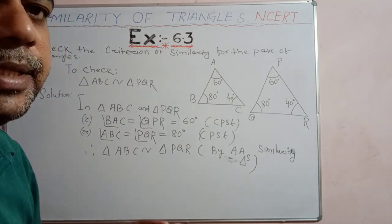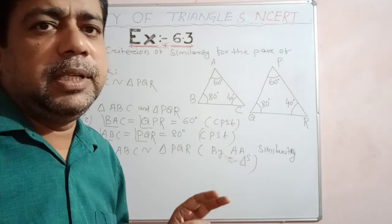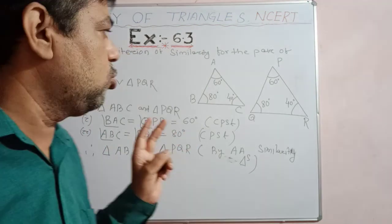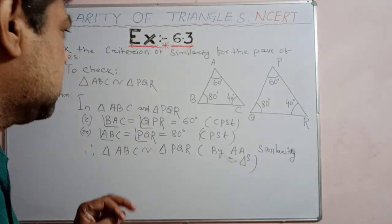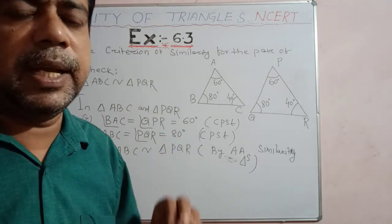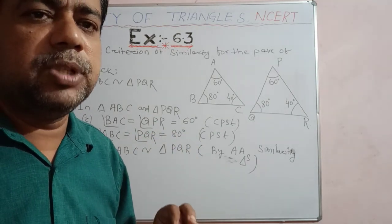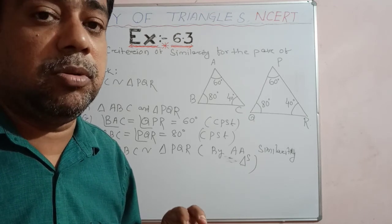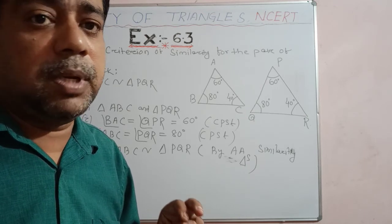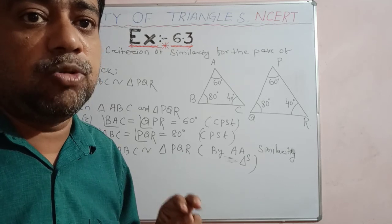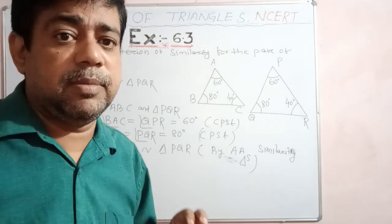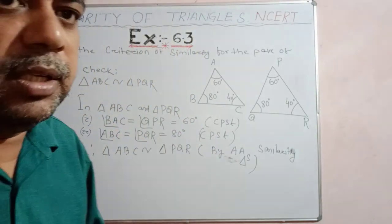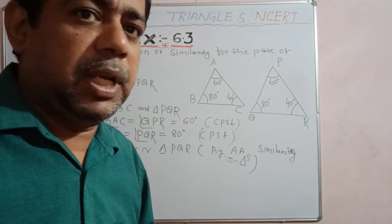So it is already verified that in these two triangles the two corresponding angles are equal, so the triangles are similar according to the angle-angle criteria. This is one simple problem showing the use of the angle-angle similarity criteria. Thank you, students. Bye.